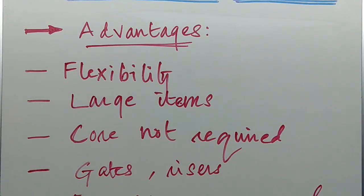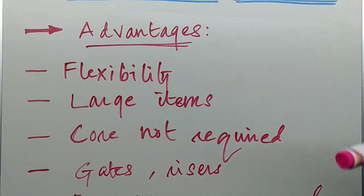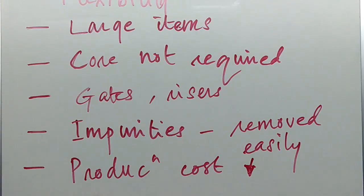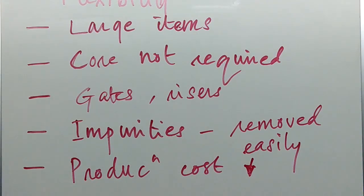Unlike investment casting, very large items can be produced through centrifugal casting. No core is required to produce hollow jobs, because centrifugal force creates the hollow shape automatically. Similarly, gates and risers are not required. Impurities that settle towards the center are of lighter density and can be removed easily, and the production cost is very low.